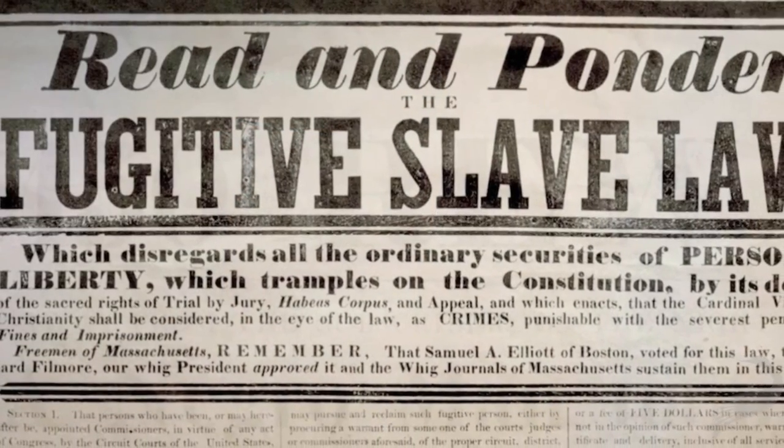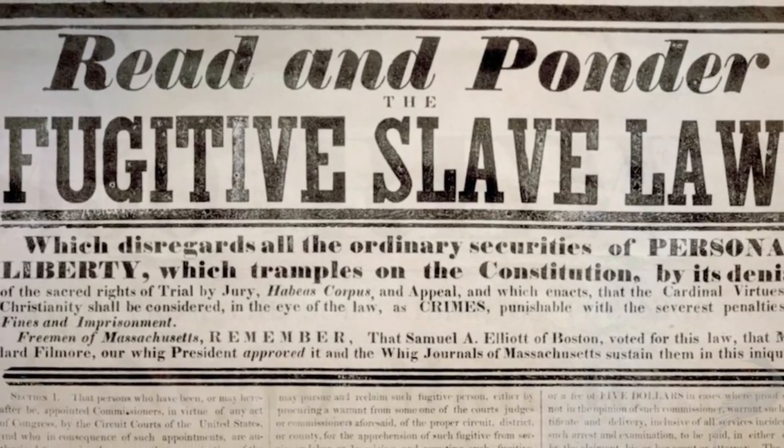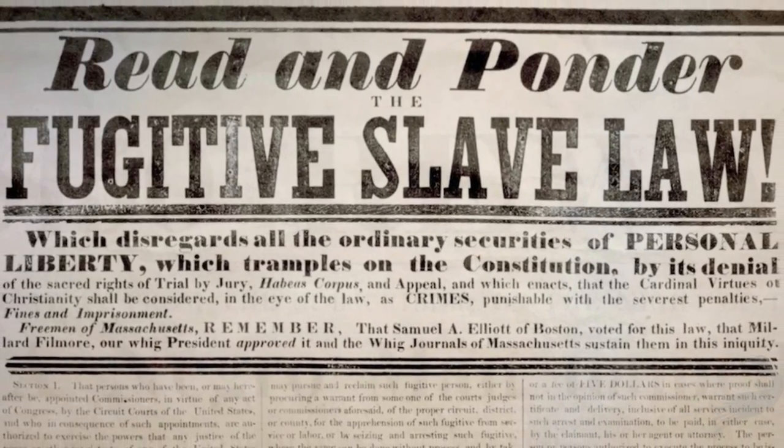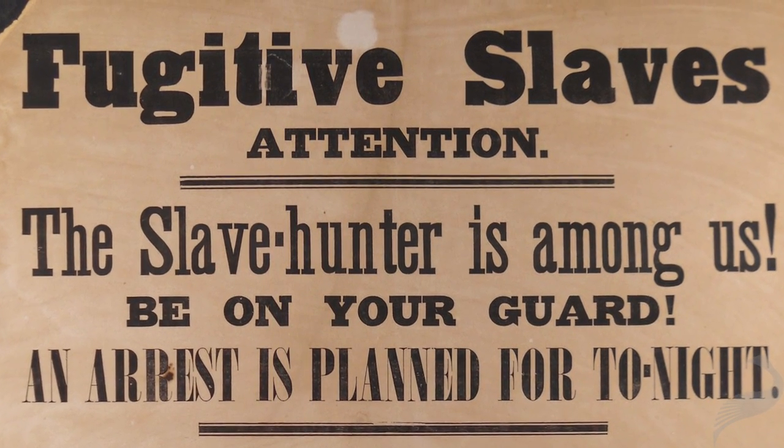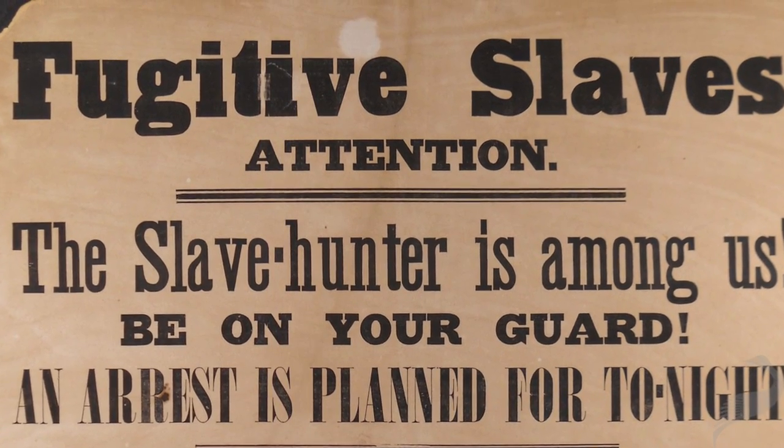The South was dominated by slaveholders politically, and they loved federal power when it worked to their advantage. So in 1850, they asked for and received one of the toughest fugitive slave laws that had yet been seen. The 1850 Fugitive Slave Act put federal power in the service of capturing accused escaped slaves in the North. Federal marshals were paid bounties — $5 if the individual walked free, and $10 if they ended up being sent back to slavery. The result was a lot of free blacks from the North being sent back south as slaves.